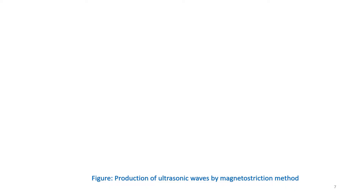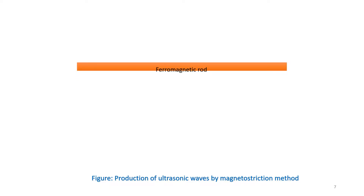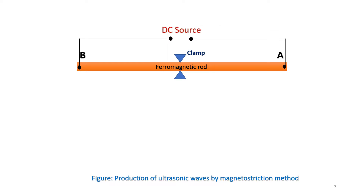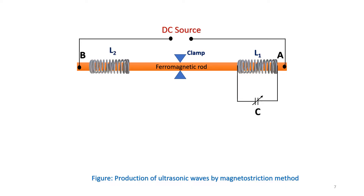To produce ultrasonic waves by the magnetostriction method, a transducer oscillator circuit is designed. A ferromagnetic rod of length AB is selected and clamped at the middle. A DC source is connected across the ends of that ferromagnetic rod. An inductor coil L1 is wound over the rod at point A, and a variable capacitor is connected to L1 in parallel to form an LC circuit. Another inductor coil is wound over the ferromagnetic rod at point B.